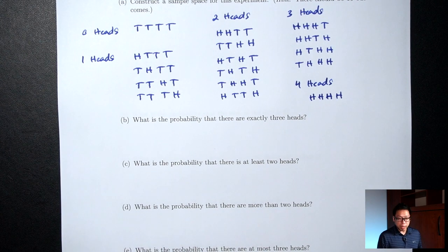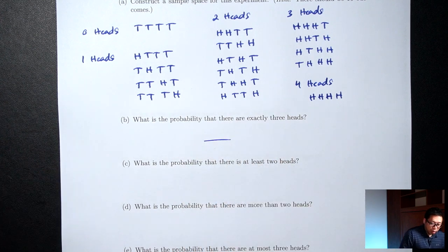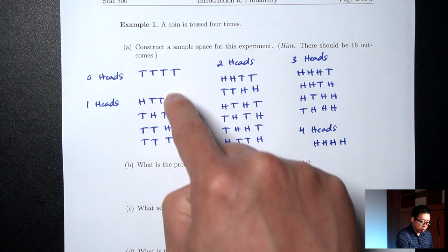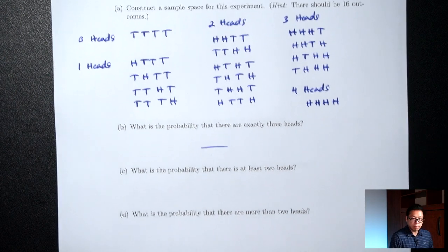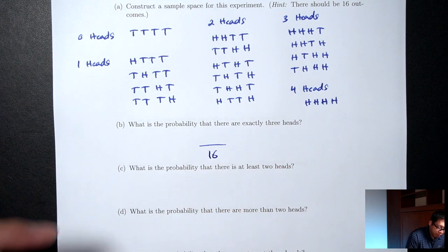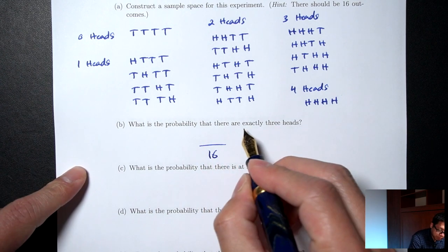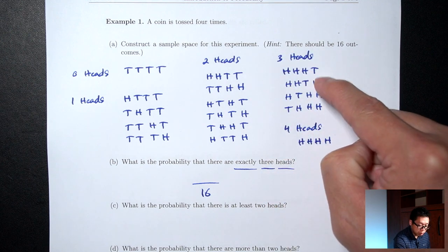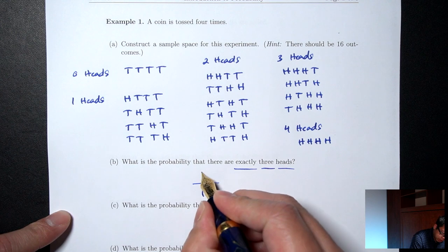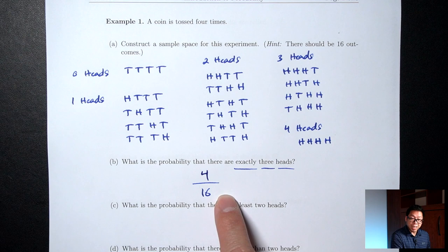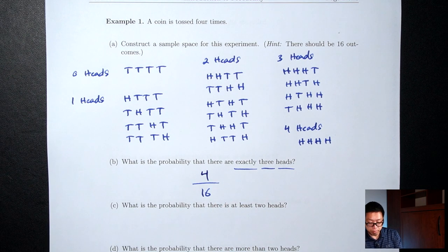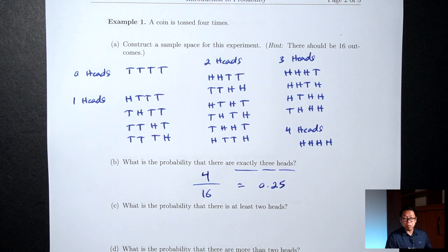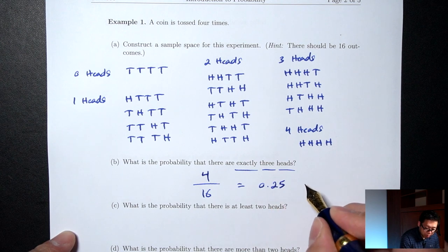Part B: What's the probability of exactly three heads? The bottom of the fraction is the total number of outcomes in the sample space, which is 16. The top is how many outcomes have exactly three heads — those are the four three-head outcomes we listed. So P(exactly 3 heads) = 4/16. Converting to a decimal: 4 ÷ 16 = 0.25. As a percent, that's 25%.